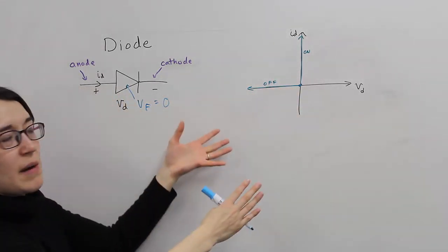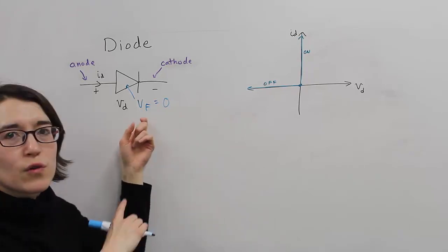So this is the basic operation for an ideal diode where we assume the forward voltage is zero.